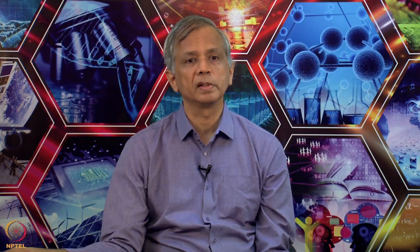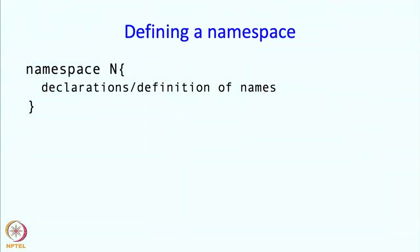How do you define a namespace? Defining a namespace is simple, you just write namespace followed by the name of that namespace, in this case the name is n and then inside that block you put in declarations or definitions of names.